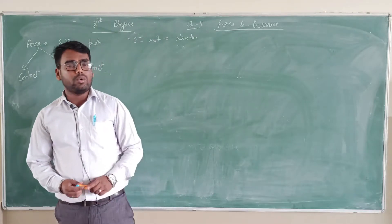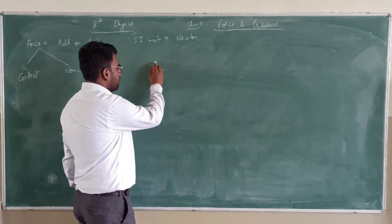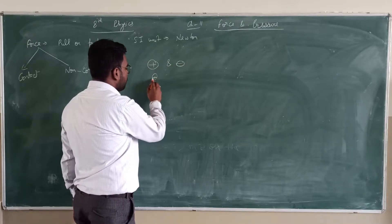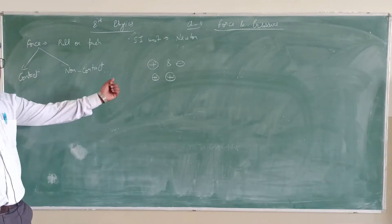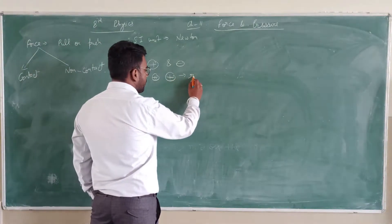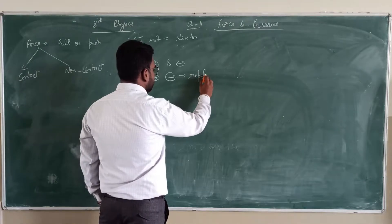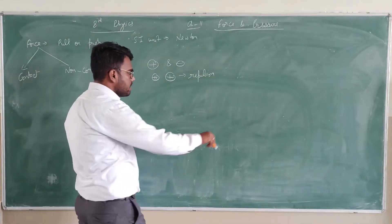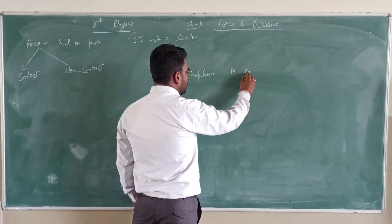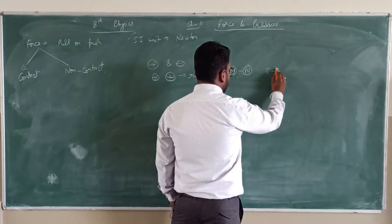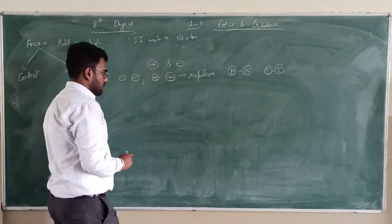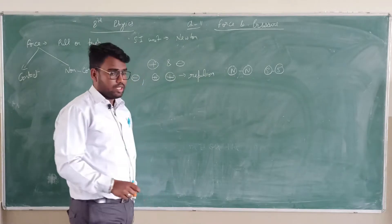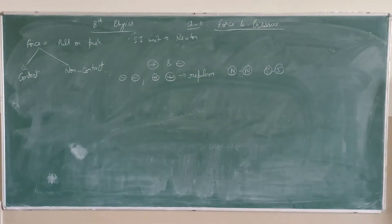Non-contact forces are of three types: gravitational force, magnetic force, and electrostatic force. Electrostatic force is due to charge — there are two types of charge, positive and negative. When two positive charges interact they will repel each other. Similarly for magnetic force, north-north repel each other, south-south also repel each other, and negative-negative also repel each other. Positive-negative attract each other, north-south attract each other. Gravitational force is always attractive in nature.